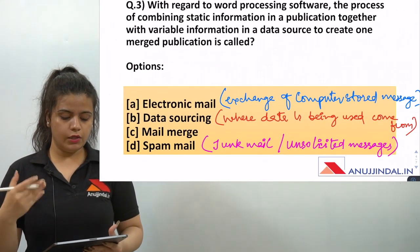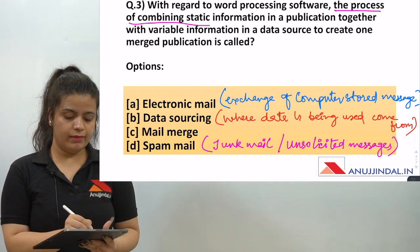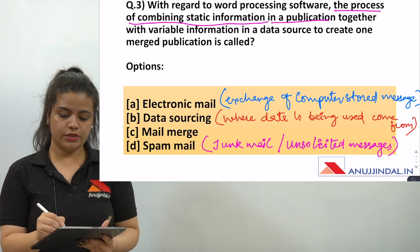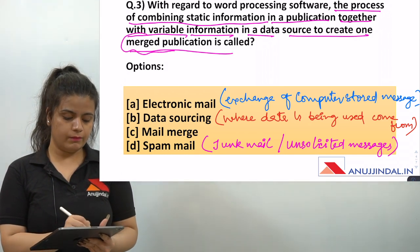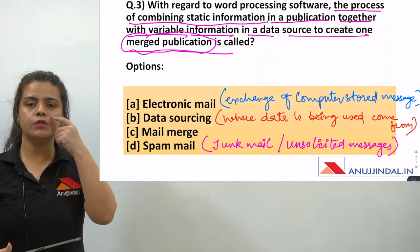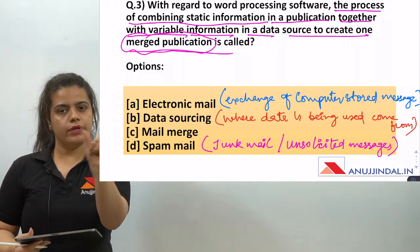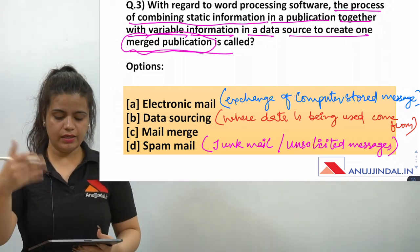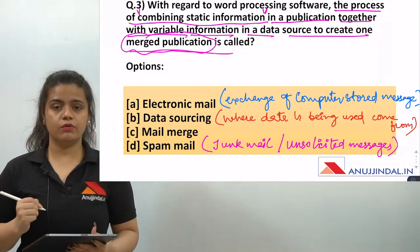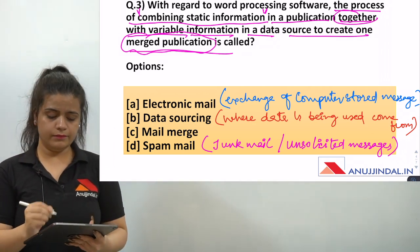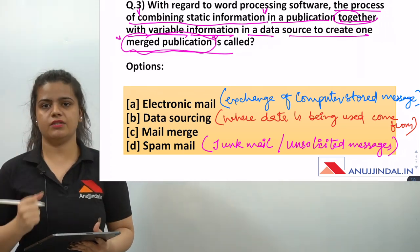The third question is about word processing software: the process of combining static information in a publication together with variable information in a data source is called what? The key words to note here are 'merged publication' — whenever you see a definition, always underline the most important words to identify the answer clearly.